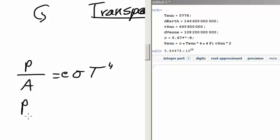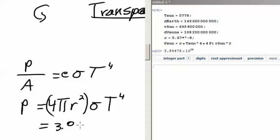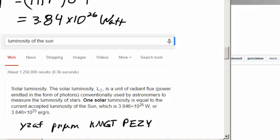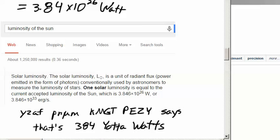I'm not worrying too much about the units because I'm just going to do everything in SI units. Next, I can calculate the power of the sun by taking its surface area, which is 4 pi r squared times sigma t to the fourth. And that comes out to be equal to 3.844 times 10 to the 26th. And this is in watts. You can look up that number and see that that is called the luminosity of the sun. And if you ask Yusef Pnum Kumgit Pezi, he says that's 384 yotta watts.